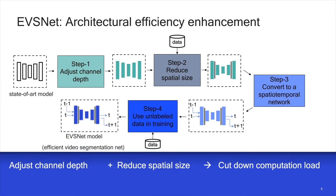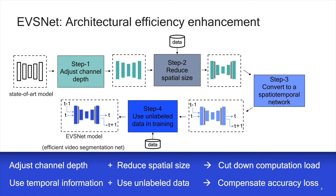The last step applies a training method that utilizes both labeled and unlabeled data for better training results as well as better use of abundant unlabeled images. The final outcome is the efficient video segmentation net, or EVS Net.